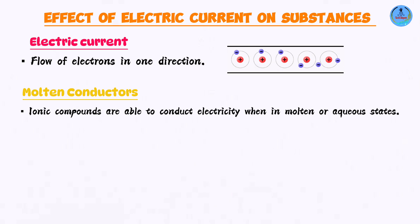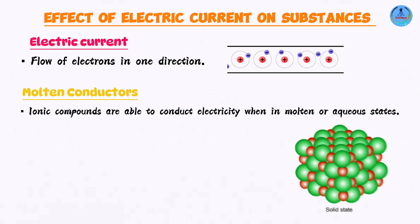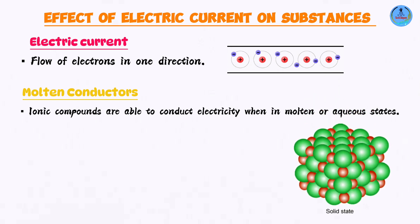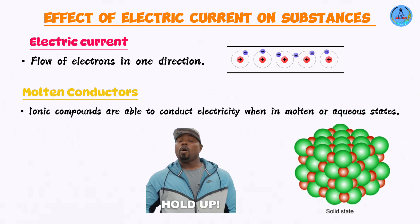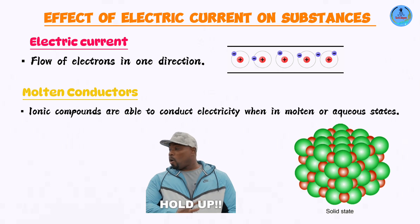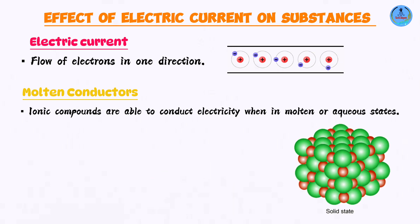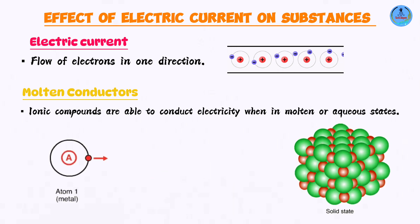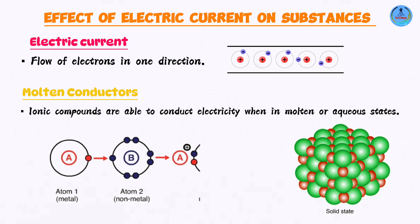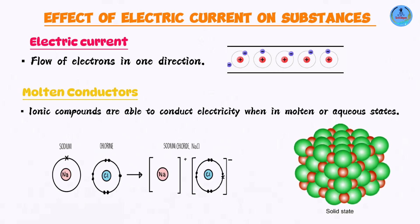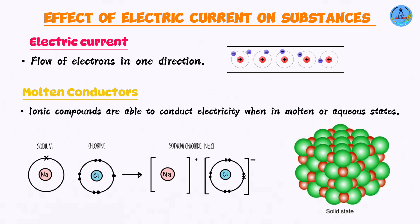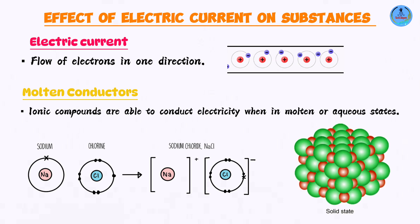You're going to have ionic compounds capable of conducting an electric current when in molten state. What are ionic compounds? Ionic compounds are formed when you have a metal reacting with a non-metal. For example, if sodium metal reacted with chlorine gas, you're going to end up having a product called sodium chloride. Sodium chloride is an ionic compound.